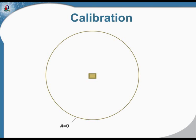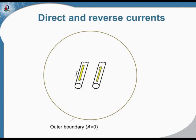It should also be understood that if there is only one current in the system, there is always a return current. So if you don't show both direct and return currents in your model, it is supposed that the return path for the current goes on the external boundary. It is better to define both currents — it is more physically clear — but if not, the return path is assumed to be the external boundary.